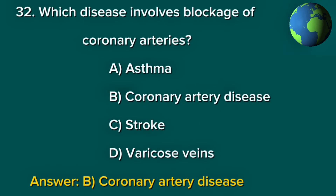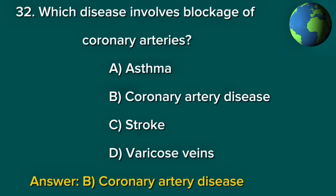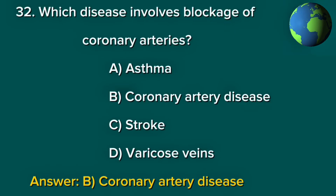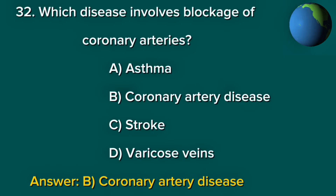Question 32. Which disease involves blockage of coronary arteries? A. Asthma. B. Coronary artery disease. C. Stroke. D. Varicose veins. Answer: B. Coronary artery disease.